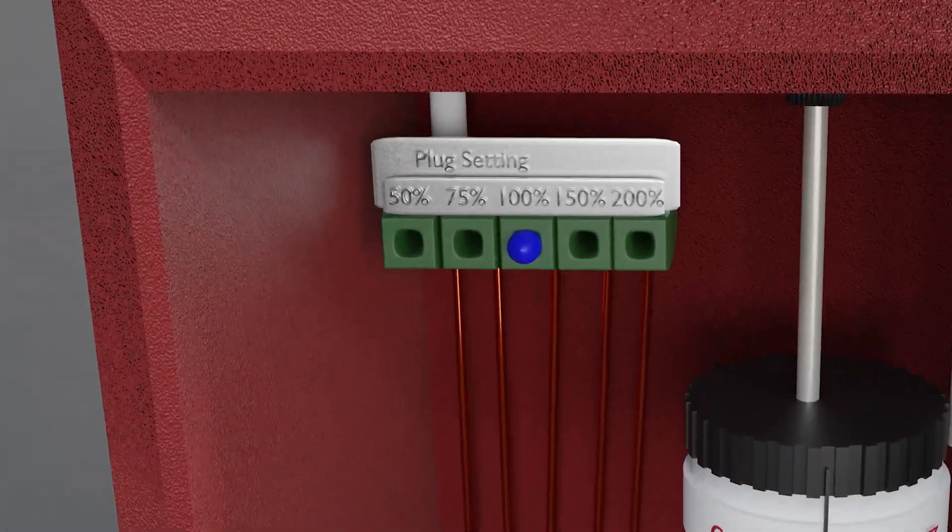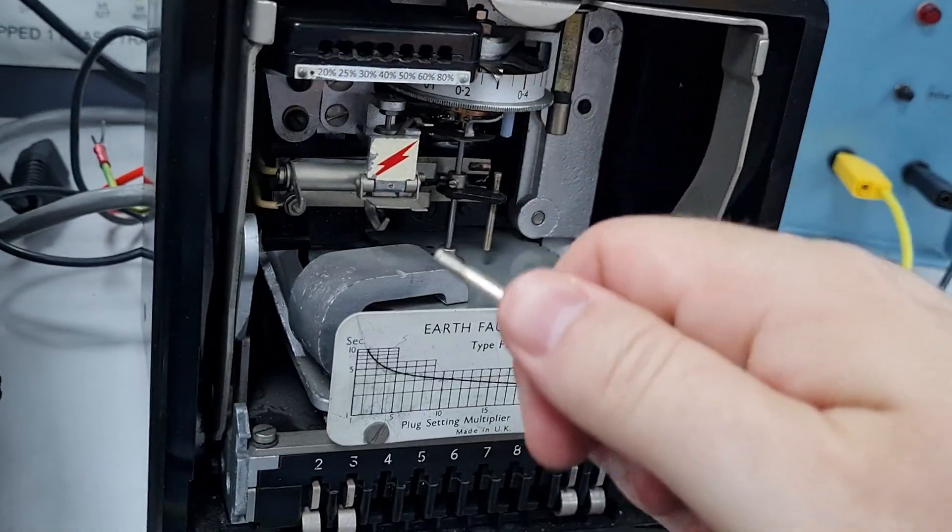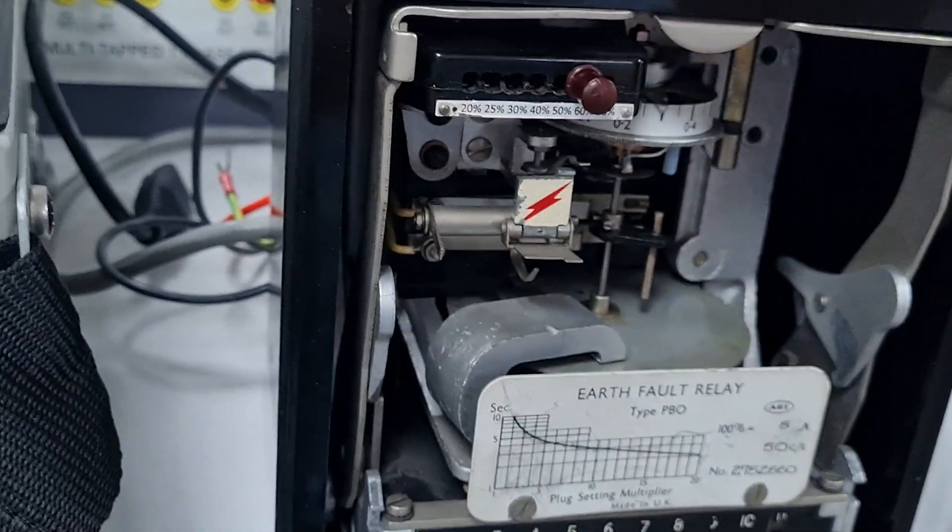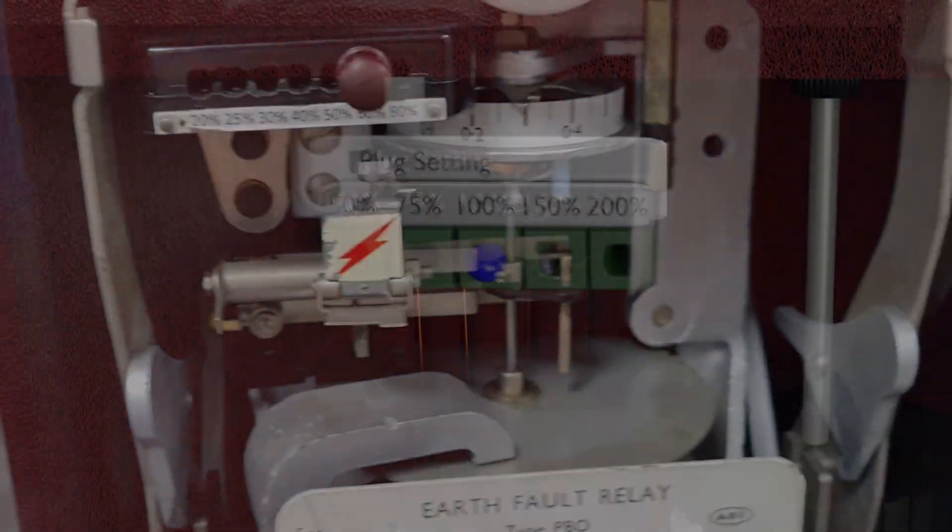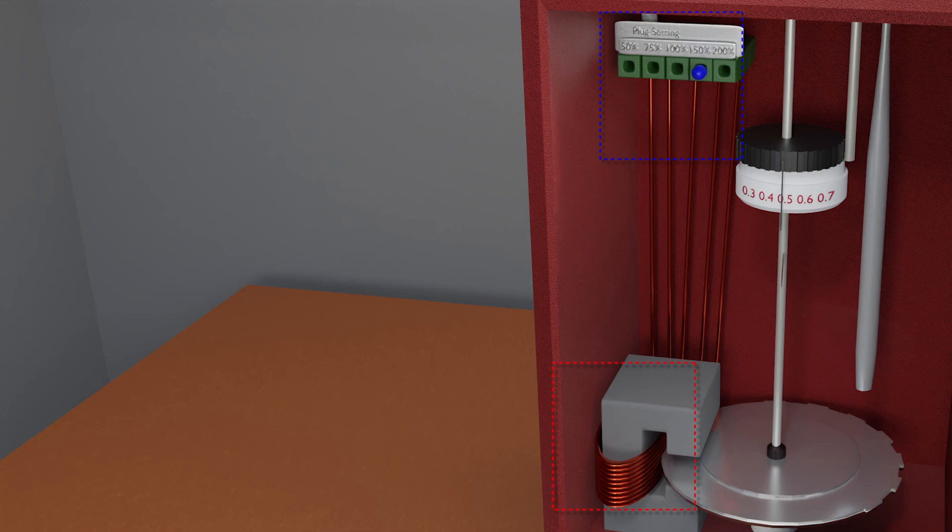Now I mentioned before that there are two ways to configure the relay. The first one I'll talk about is called the plug setting. This allows the user to change how sensitive the relay is to current. And quite simply the position of the plug determines how many turns couple into the magnetic core which helps to induce torque into the disc.